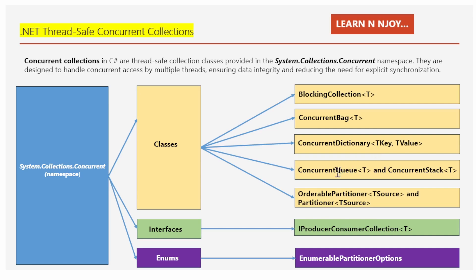Now let's come to ConcurrentQueue and ConcurrentStack. ConcurrentQueue — picture a line at the kitchen counter in terms of FIFO, first in first out. Chefs take the first ingredient from the line and add new items to the end. For ConcurrentStack, think of a stack of plates — LIFO, last in first out. The last plate added is the first one taken. Both ensure that chefs can work with items in a specific order without any conflict.